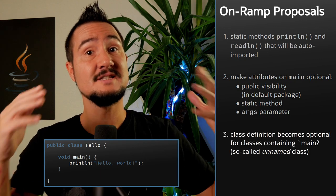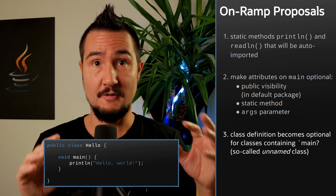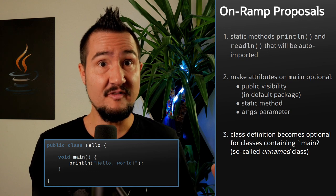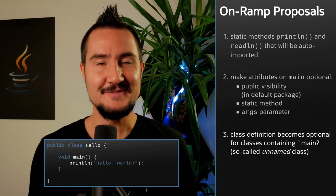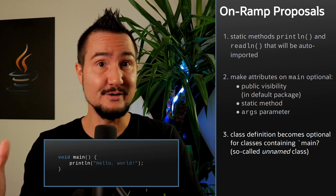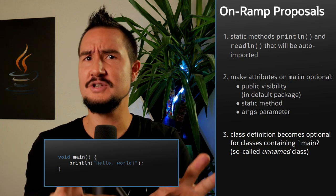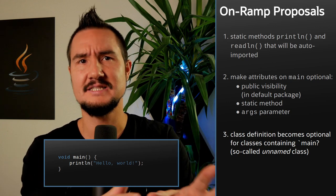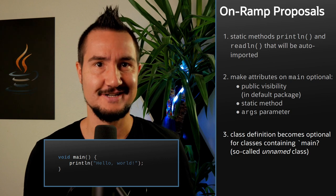Finally, and most extravagant, is the proposal to drop the requirement for main and other methods in the same file to be wrapped into a class. Yes, you got that right — free-floating methods, but just in the freshly minted concept of the unnamed class, so nothing to put into your real-life project.